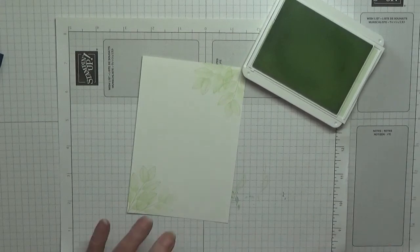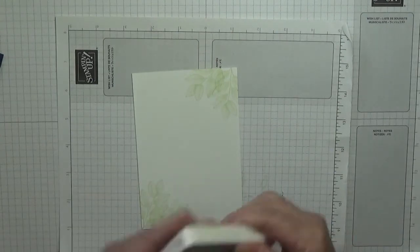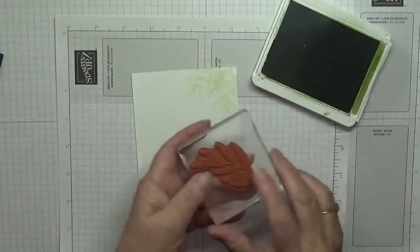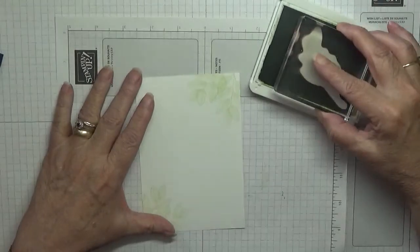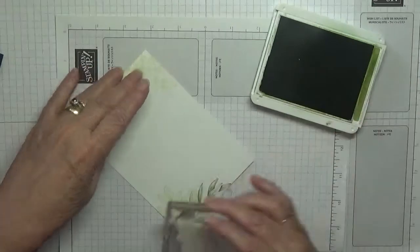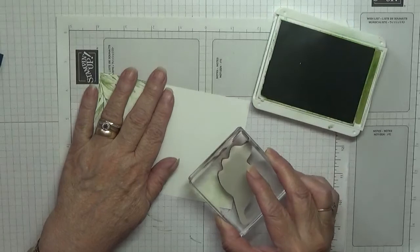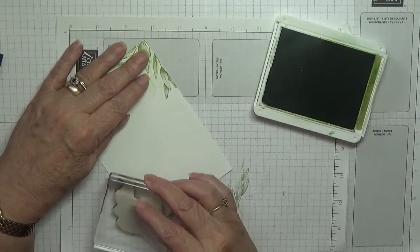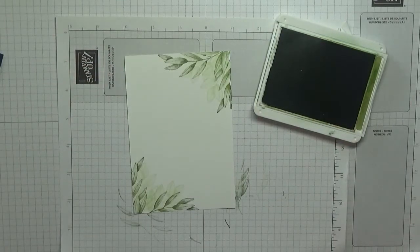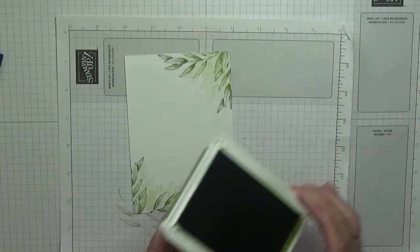Clean it off, and then we're going to use Old Olive, and we're going to use this long leaf stamp and we're just going to go either side of that, like that, like that, like that. Clean off the stamp, that's all we need there.